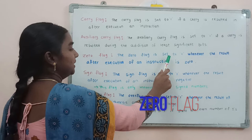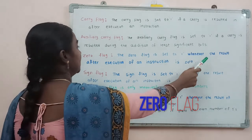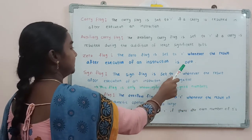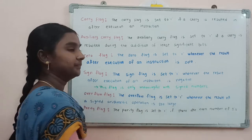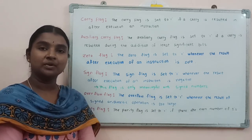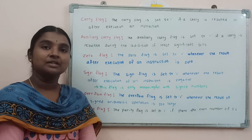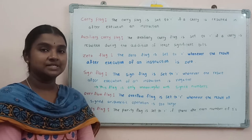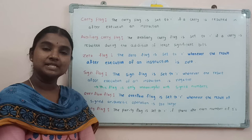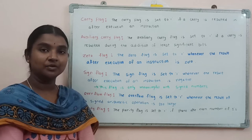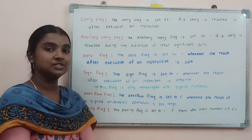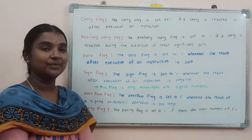The zero flag is set to 1 whenever the result after execution of an instruction is zero. For example, when we subtract two equal numbers the result will be zero — this zero flag is going to be set to 1. If we do not get zero, this zero flag is going to be set to 0.